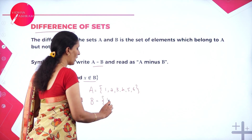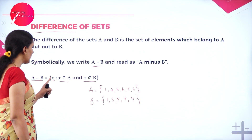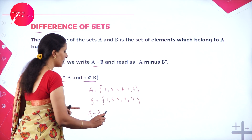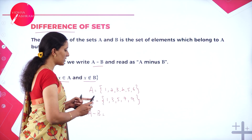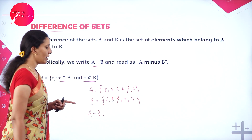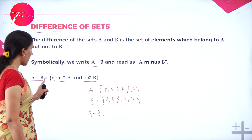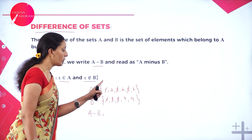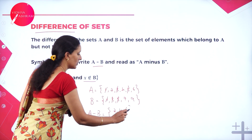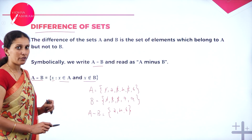Set A is 1, 2, 3, 4, 5, 6 and set B is 1, 3, 5, 7, 9. I need to write only the elements which are in A but not in B, denoted A minus B. The common elements in A and B are 1, 3, and 5. So these are contained in both A and B. But when I say A minus B, I need only the elements in A but not in B — that is 2, 4, and 6. These are the elements only in A, not in B, which is the definition of A minus B.